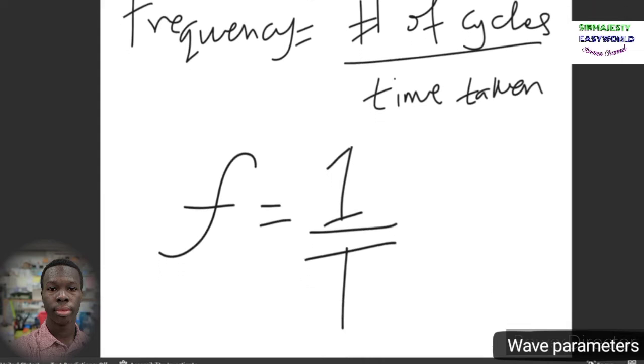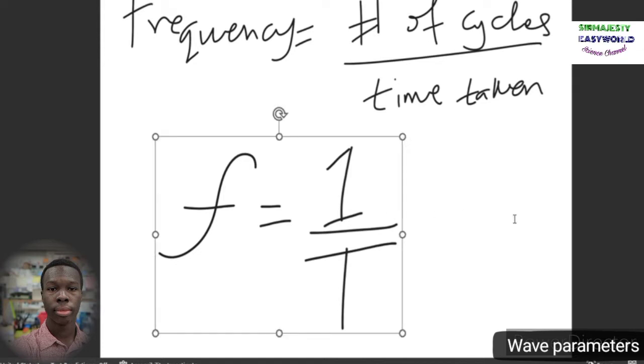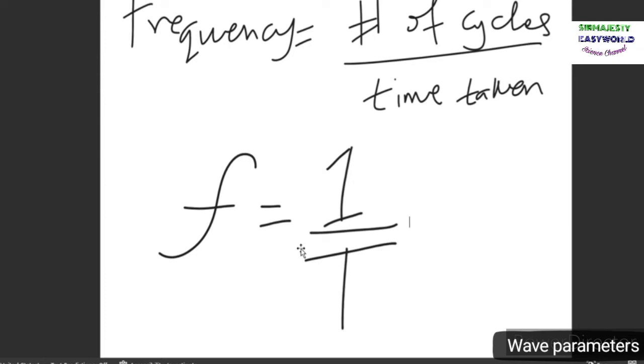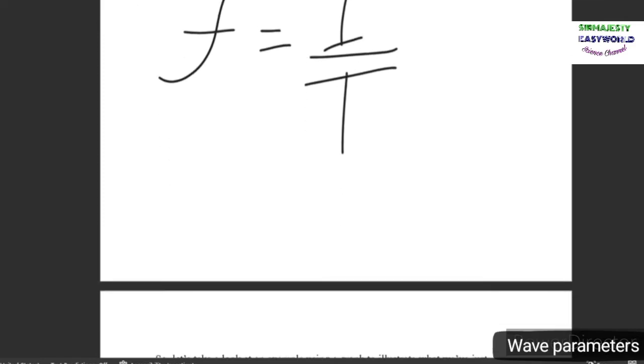This is the formula shown for frequency. Frequency is the number of cycles divided by time taken. The second relationship here shows the equation between frequency and period, where frequency is equal to the inverse of the period. Moving on.